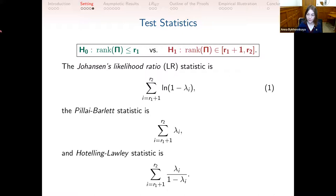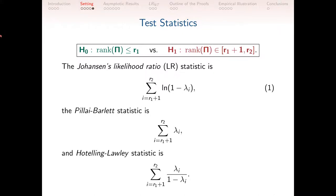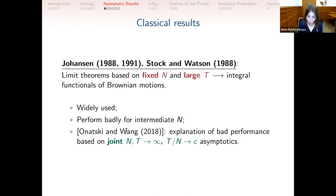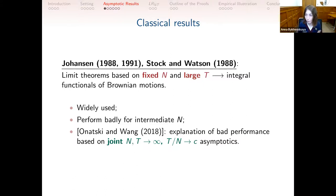A question was raised about the assumptions on coefficient matrices as n gets larger—this will be addressed. In the traditional small-n world—as in Johansen's papers and Stock and Watson (1988)—with n fixed and T → ∞, these statistics converge to various functionals of Brownian motions, which were widely used. We have seen they perform badly when n is intermediate, close to T. Onatski and Wang (2018) suggested joint asymptotics where both T and n go to infinity proportionately, and that is what we will do now.